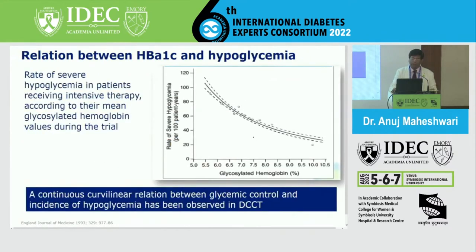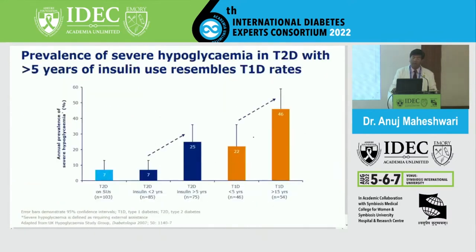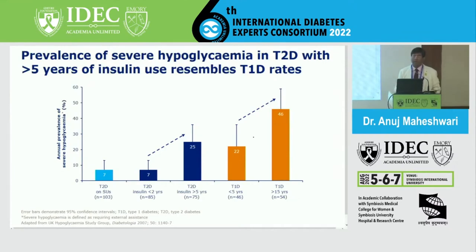Regarding the relation between HbA1c and hypoglycemia: the lower the HbA1c, the more the hypoglycemia. The more we strive for tight glycemic achievement, the more we lead towards incidences of hypoglycemia. A continuous curvilinear relation between glycemic control and incidence of hypoglycemia has been observed in the DCCT trial. Prevalence of severe hypoglycemia in type 2 diabetes with more than 5 years of insulin use resembles that of type 1 diabetes, with similar hypoglycemia occurrence.